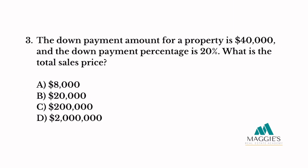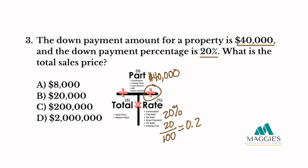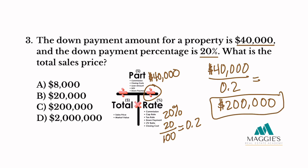Number three. The down payment amount for a property is $40,000 and the down payment percentage is 20%. What is the total sales price? Bringing in our T-chart, the down payment of $40,000 goes on the top, and the percentage of 20% goes in the bottom right column. Remember to convert your percent to a decimal by dividing by 100: that equals 0.2. Now all we have to do is divide: $40,000 divided by 0.2 equals $200,000. So the answer to this one is C.